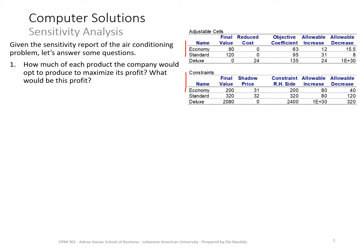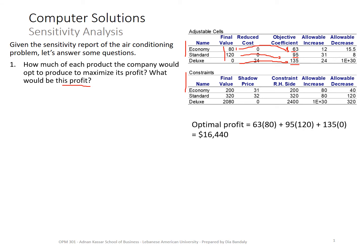First question: how many of each product the company would produce? This is our optimal solution. You can go for 10, 5, and 20 — that's a feasible solution, but it's not the optimal. So if you want to maximize your profit, the answer is 81, 20, and 0. For the optimal profit, you multiply each value by its corresponding objective coefficient — even if you only have the sensitivity report, you can identify each objective coefficient. Multiplying them out gives us a profit of $16,440.